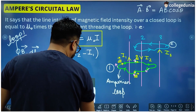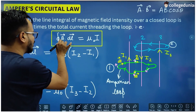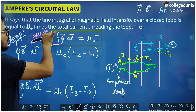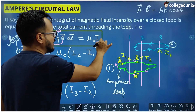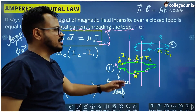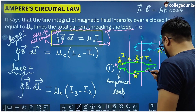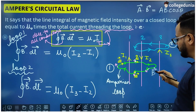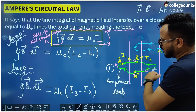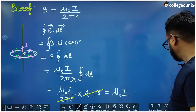Just remember one important thing: the magnetic field B on the left-hand side is the magnetic field due to all conductors, but the current I on the right-hand side is only the current threading the loop — meaning only the current which is passing through the loop. For example, at a point on the loop, B may be due to conductors 1, 2, and 3, but when applying Ampere's Circuital Law we take only those currents passing through the loop.